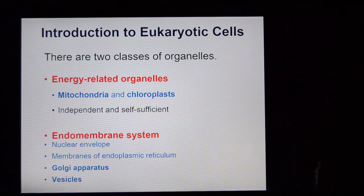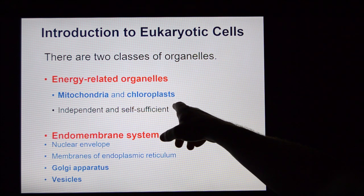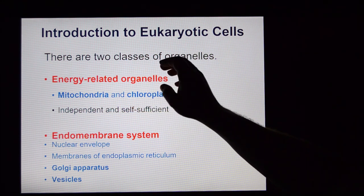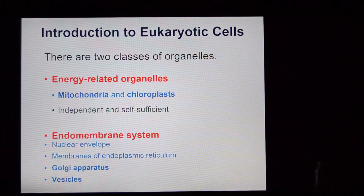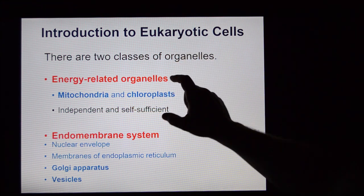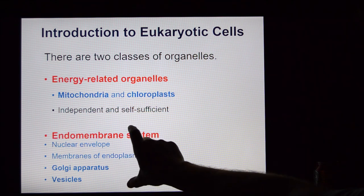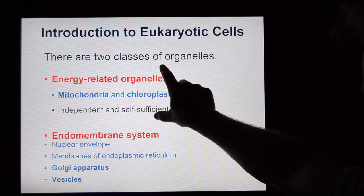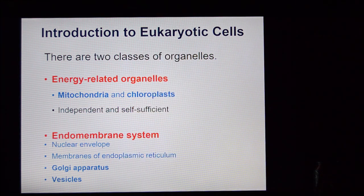In the realm of eukaryotic cells, there are two types of organelles: the energy-related organelles — mitochondria and chloroplasts — and the endomembrane system, which gets at the real function of the cell. Think of it this way: the energy-related organelles provide the power to run the endomembrane system, and the endomembrane system is what the cell actually does — that's the job the cell performs.